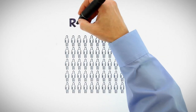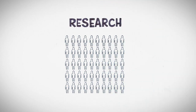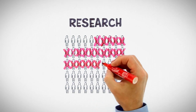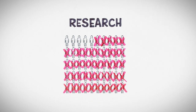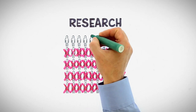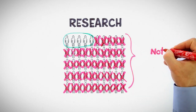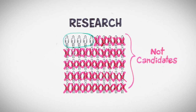Drug companies have to be picky about who they study in a clinical research trial. Subjects should be as similar to each other as possible, and to measure drug effect you have to try to exclude people whose outcome will be impacted by other medications, by comorbidities, or other unique factors. You also want to focus on patients who are at a stage of disease likely to have a worsening of symptoms if left untreated and those who have the greatest potential treatment response. Of course this leaves a lot of patients out, but research trials are for research, not treatment — they have to have strict enrollment criteria.